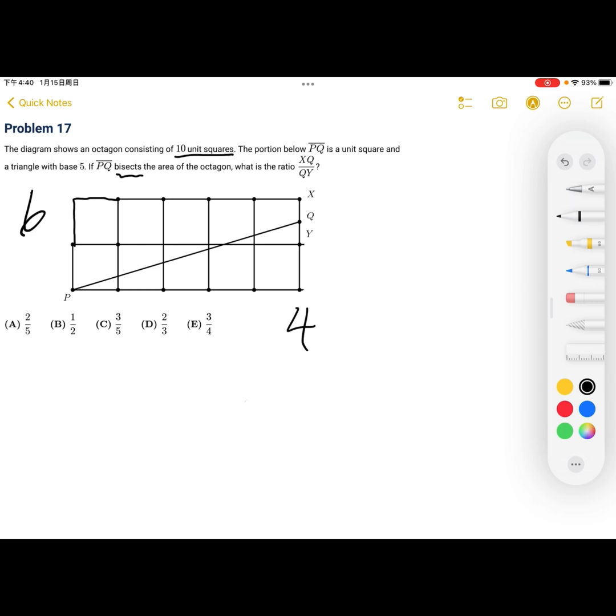So, now all we have to do is solve for the two heights, XQ and QY. We have the base is equal to 5, so that means 4 is equal to 5 times the height that we want to find out divided by 2. Solving for h, 8 is equal to 5h, and h is equal to 8 fifths. Now, 8 fifths is the unit square plus QY.